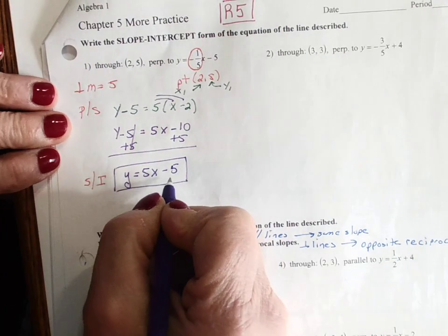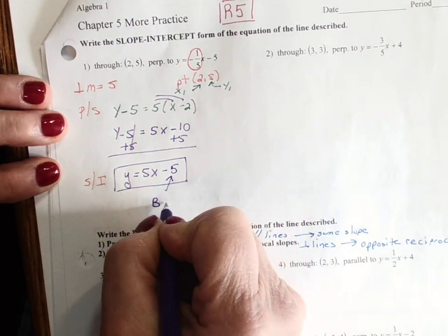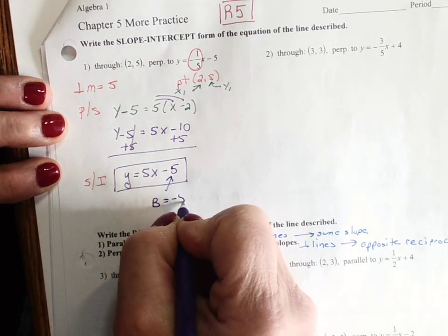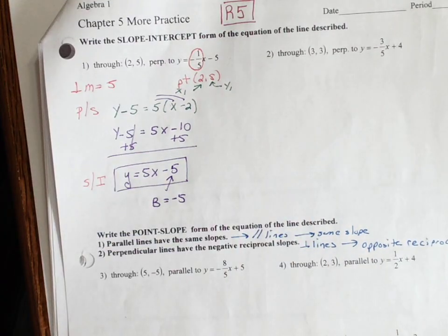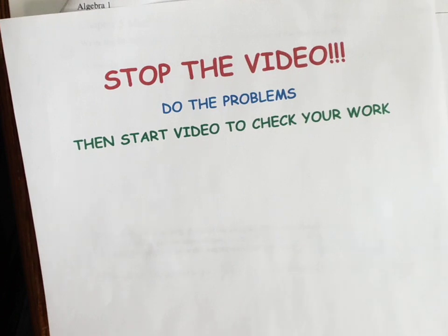And if they ask you for the y intercept, the y intercept is b equals negative 5. So now what I'd like you to do is pause the video, do the next problem, and when you're ready, then come back and restart it.